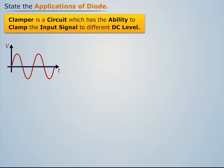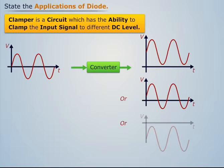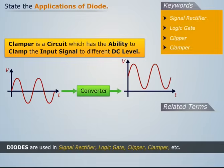Clamper is a circuit which has the ability to clamp the input signal to different DC levels.